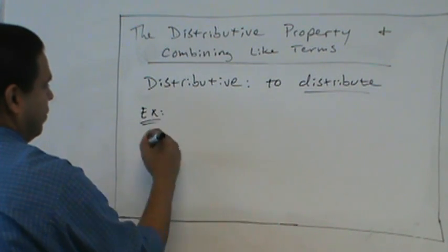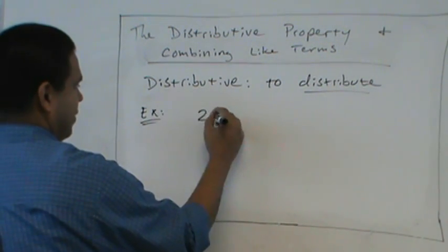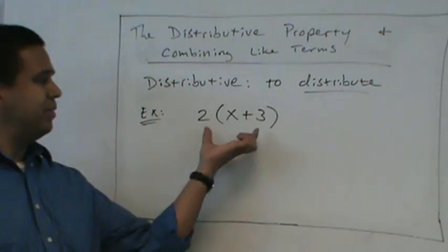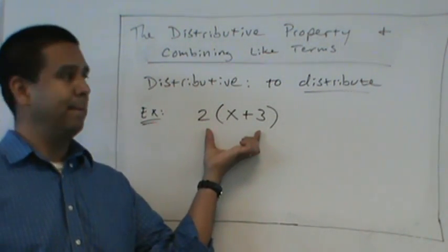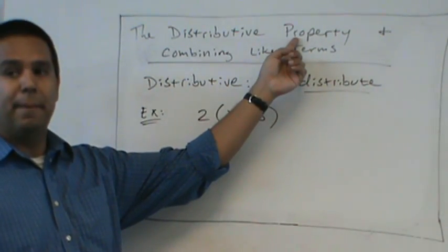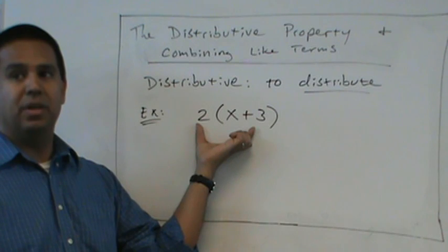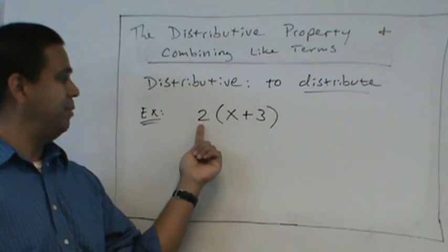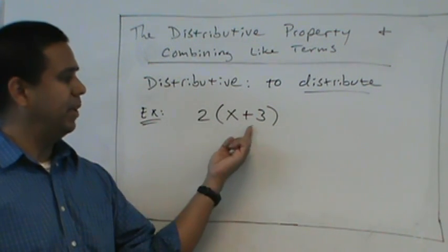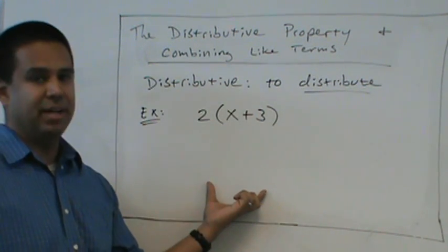So we distribute when we see parentheses. So if I have 2(x+3), so if I have something like this, the distributive property says that we're going to multiply. We're going to distribute this 2 to this x plus 3. And I'll show you why it works.